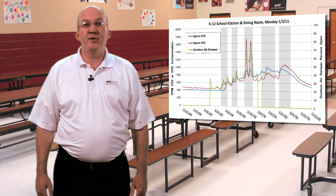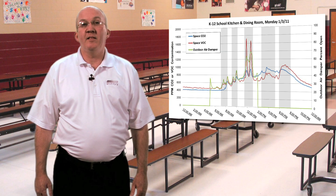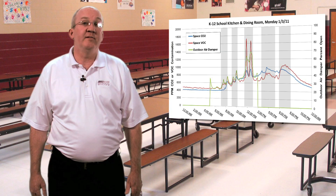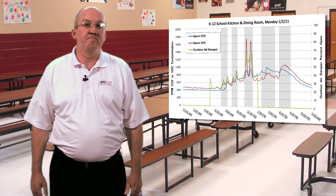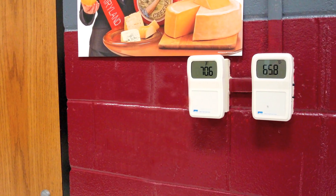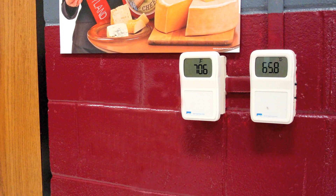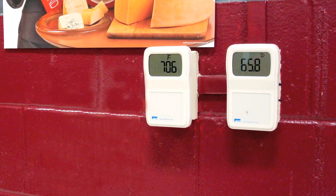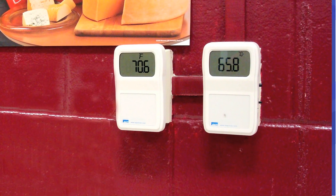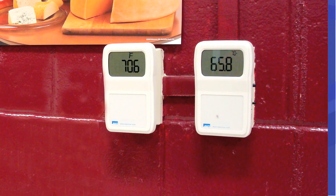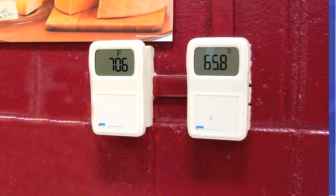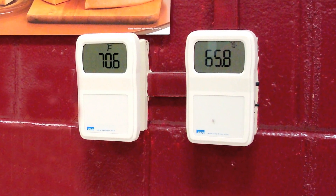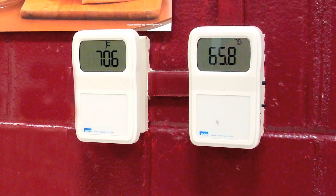The space is also used for athletic practices, exercise classes, and occasional adult meetings in the evening. The VOC and CO2 sensors are located next to each other in the dining room near the kitchen entrance. The open percentage of the outdoor air damper for this area is controlled by the VOC sensor output through a PID control loop.